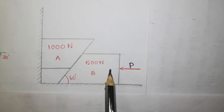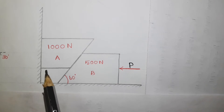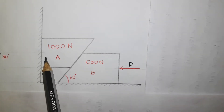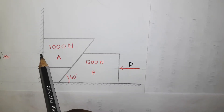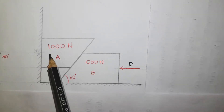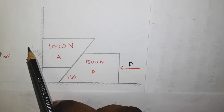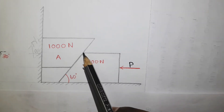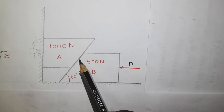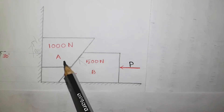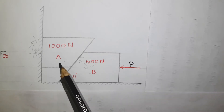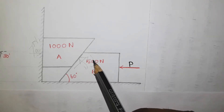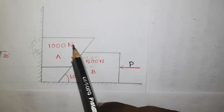Now I have to draw the free body diagram for this system. Let me take block A first and identify how many forces are associated with it. The first one is its weight, 1000 Newton. The second one is the normal reaction N1 from the wall. When this block tries to come down, there will be an upward friction force F1. Also, there is a contact between block A and B, so there is a normal reaction N2 given by block B to block A, and a friction force F2 opposing the motion.